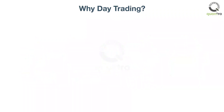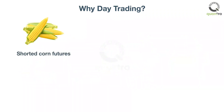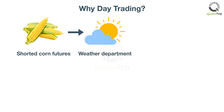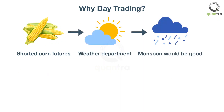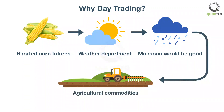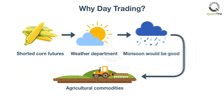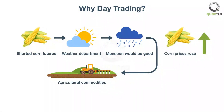Let's take another scenario, where you shorted corn futures. After the market closed, the weather department predicted that monsoon would be good this year. This is positive news for most of the agricultural commodities. The next trading day, corn prices rose, and you lost money.